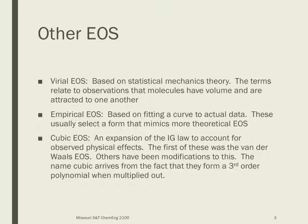The empirical equations of state are going to be ones that are based on fitting curves to the actual data. Generally these are a form that imitates the more theoretical equations of state. One of the most well-known of the empirical equation of state category is the Benedict-Webb-Rubin equation of state, which is based on the model of the virial equations of state.